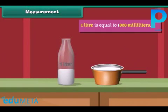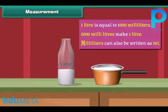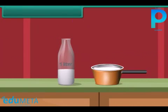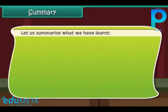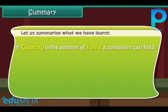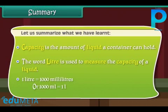One liter is equal to 1000 milliliters. This means 1000 milliliters make one liter. Milliliters can also be written as ml. Let us summarize what we have learned: capacity is the amount of liquid a container can hold. The word liter is used to measure the capacity of a liquid. One liter is equal to 1000 milliliters.